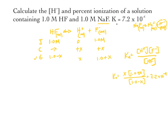Like we've done with other equilibrium problems, when our K values are small we're going to ignore x. We ignore x in both the numerator and denominator, so we end up with x times 1.0 over 1.0, which simplifies to x = 7.2 × 10⁻⁴. The 1.0 values cancel each other, so our x value is equal to 7.2 × 10⁻⁴.